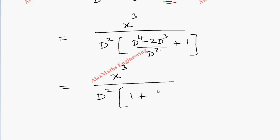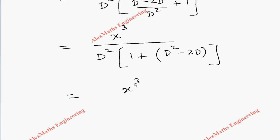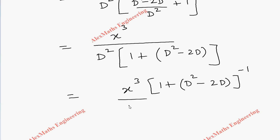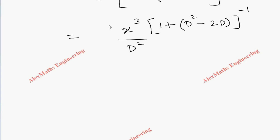Dividing individually, the bracket becomes 1 + (D² - 2D). We interchange to write x³ divided by D², multiplied by (1 + (D² - 2D))⁻¹. Now we are going to expand this using the binomial formula.